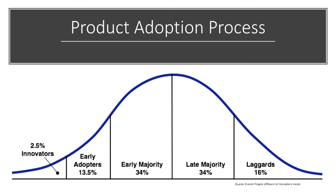The flip side of the product life cycle is how consumers adopt products - the adoption process, also called the diffusion of innovation. About two and a half percent of the population are considered innovators - they want to be the first to have something new. Then come the early adopters, who see a trend or something that suits them and start getting it.